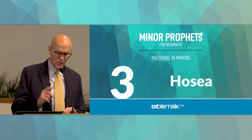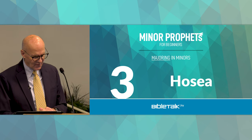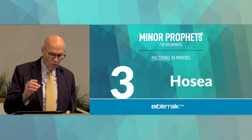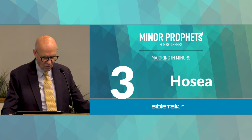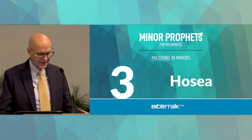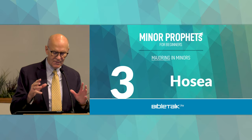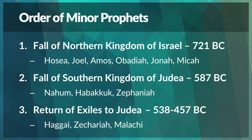One point of review that will be helpful as we study these twelve prophets is that the order in which they appear in the Bible is the same as the order they appear in history — more specifically, around three important dates. Three important time periods where these men were active. The first is the fall of the Northern Kingdom of Israel in 721 BC.